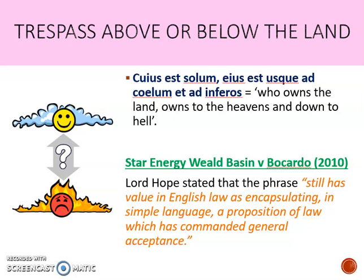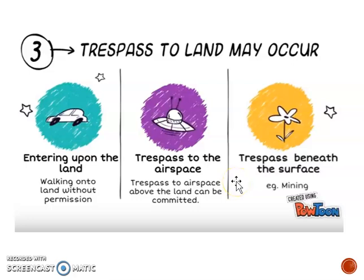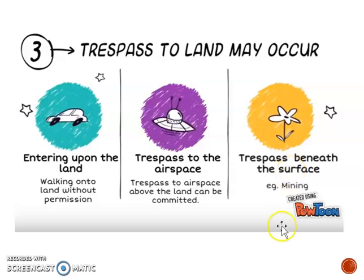We need to consider further how you commit a trespass above the land — trespass to airspace — and how you commit a trespass below the land — trespass beneath the earth. Trespass can occur in three situations: entering on the land, into airspace, or beneath the surface. The key question is what counts as airspace and what counts as beneath the surface — how low and how high does the claimant own?